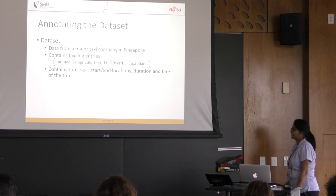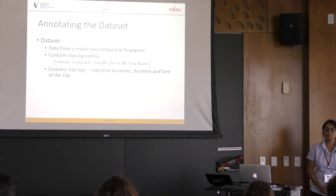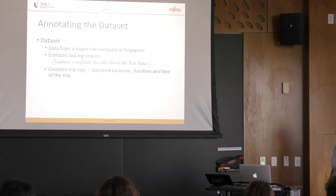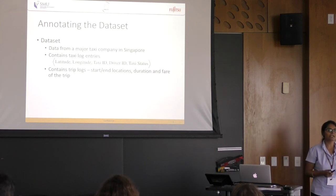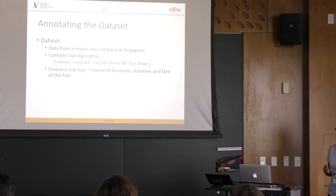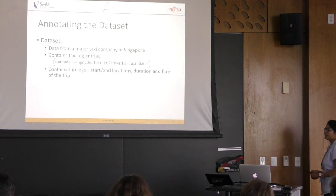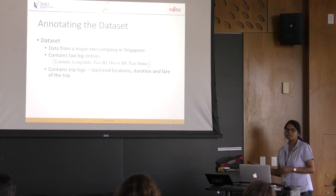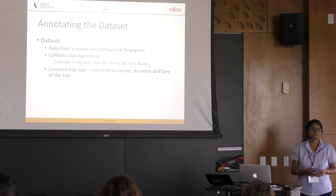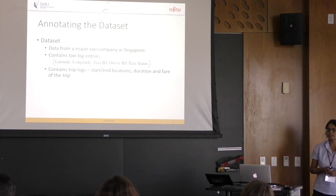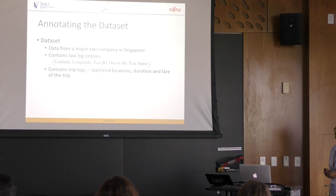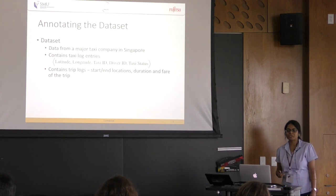Let me explain about the dataset. Data is from a major taxi company from Singapore, and it contains information about taxi logs. The logs have location information of the taxi, taxi ID, driver ID, and status of the taxi. The status tells us whether the taxi is serving a passenger, in a free state actively looking for a passenger, in an offline state, or on a break. It also contains trip log information with start and end locations, duration, and fare of the trip.